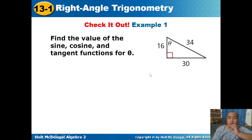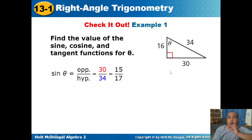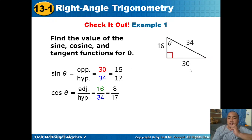Next, find the sine, cosine, and tangent for a right triangle with sides 16, 30, and 34. With theta as the reference angle, the opposite side is 30, the adjacent side is 16, and the hypotenuse is 34. Sine theta equals 30 over 34. Cosine theta equals 16 over 34, or 8 over 17. Tangent theta equals opposite over adjacent: 30 over 16.